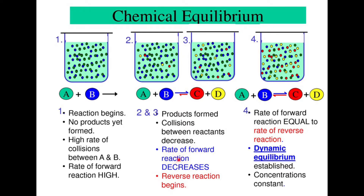The rate of the forward reaction decreases compared to before, so it starts to slow down. The reverse reaction, indicated by the little red arrow, starts to happen more. Eventually — sometimes it takes minutes, hours, days, or seconds, they're all different — the rate of the forward reaction equals the reverse. This is called dynamic equilibrium. Dynamic just means that reactants to products and products to reactants are happening at the same time.